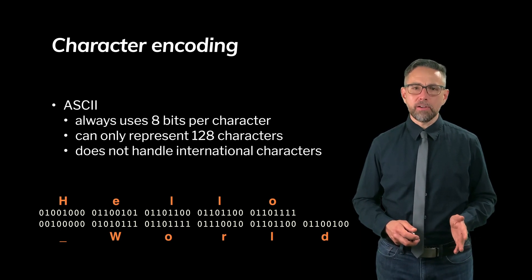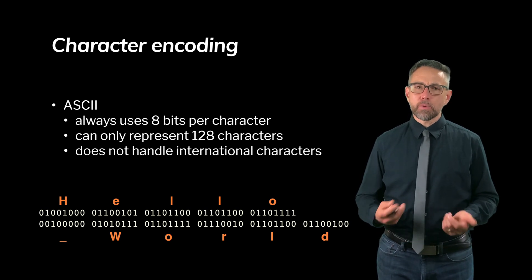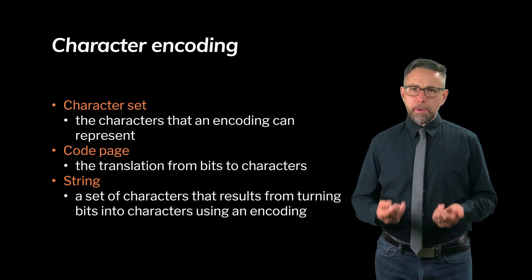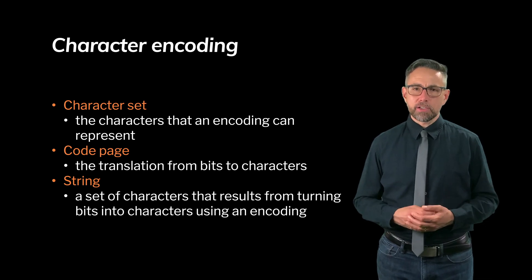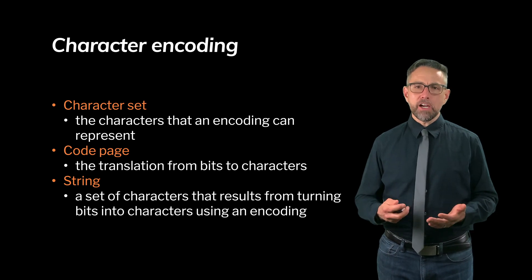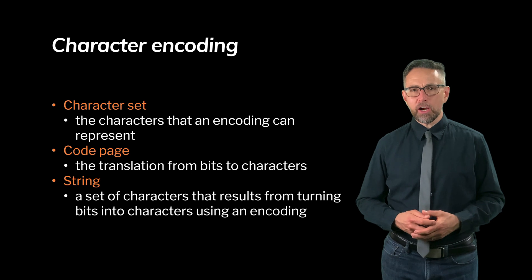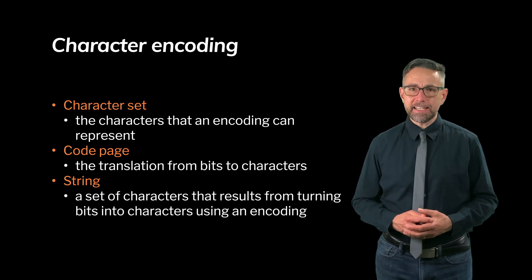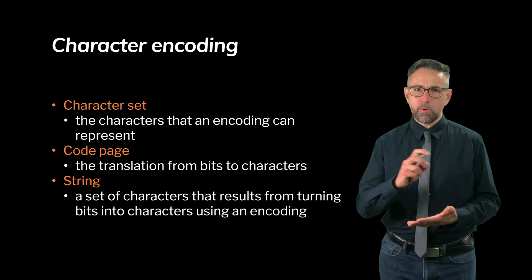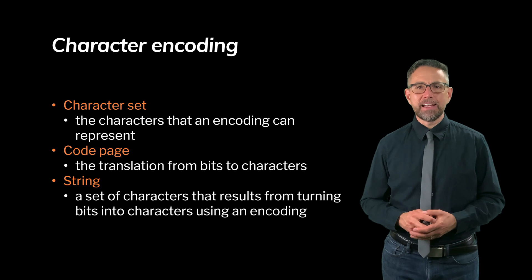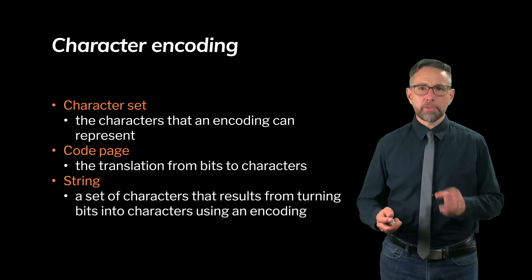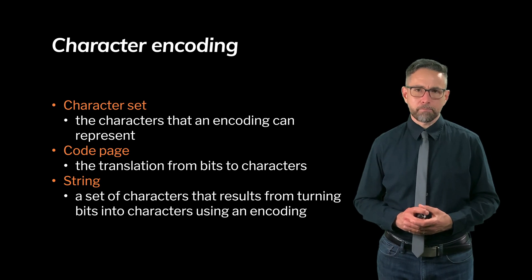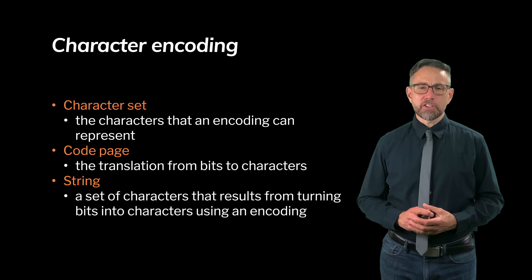ASCII always uses eight bits per character and can only represent 128 characters. We didn't stay with ASCII because it can't handle international characters. A character encoding has three components: first, a character set — the set of characters a particular encoding can represent. ASCII can't represent an eñe, an O with an umlaut, or any katakana or hiragana characters from the Japanese language. Its character set is missing those characters, which is why we had to move on.